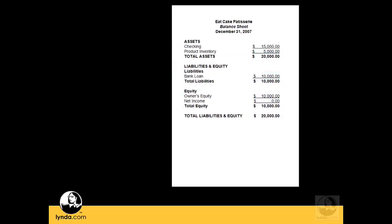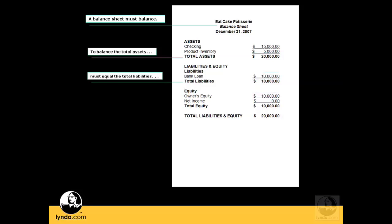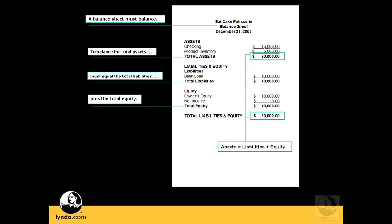One of the most important things you need to know about a balance sheet is that it needs to balance — thus the name. To balance, the total assets must equal the total liabilities plus equity. In our example, total assets show as $20,000, coming from a bank loan of $10,000 and owner's equity of $10,000. Total liabilities and equity also show as $20,000. QuickBooks will automatically try to balance your balance sheet using a method called double-entry accounting, which we'll cover in detail in the next movie.